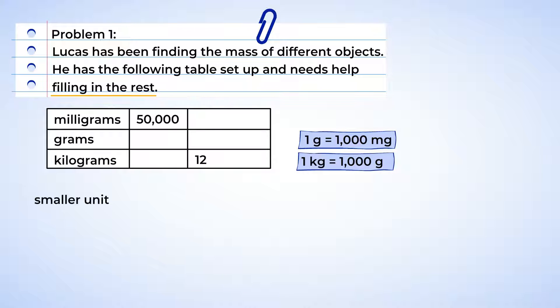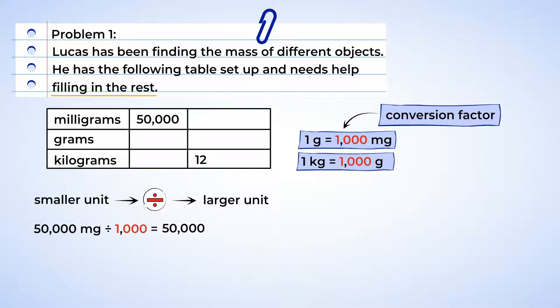When we go from a smaller unit of measure, like milligrams, to a larger unit, like grams, we need to divide by the conversion factor. In this case, 1,000. So let's do it. 50,000 divided by 1,000. That's a lot of zeros. But we can move the decimal place to the left three times when we divide by 1,000, since there are three zeros in 1,000. And we get an answer of 50. That's nifty. And now that we have 50 grams, we can divide by 1,000 again to find how many kilograms there are. And here we go. Move the decimal point three more places to the left. And we have five hundredths. So 50,000 milligrams is equivalent to 50 grams, or five hundredths kilograms.